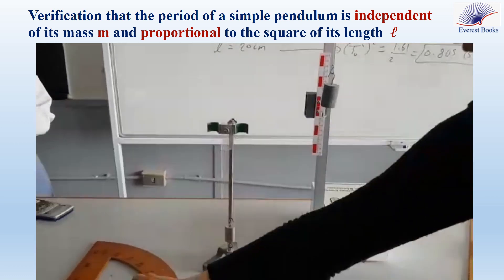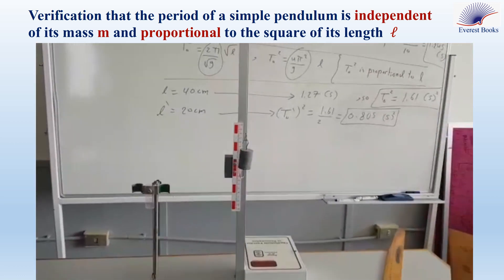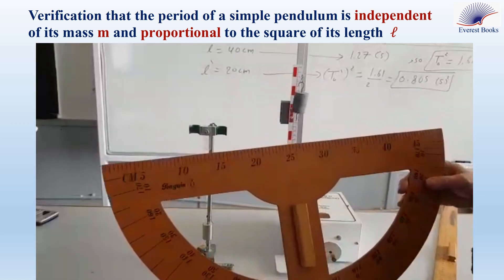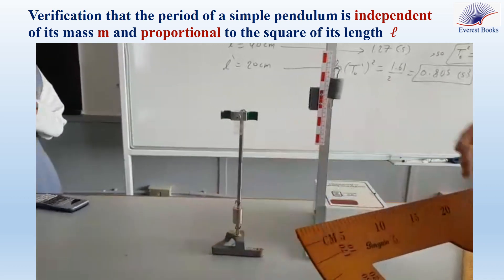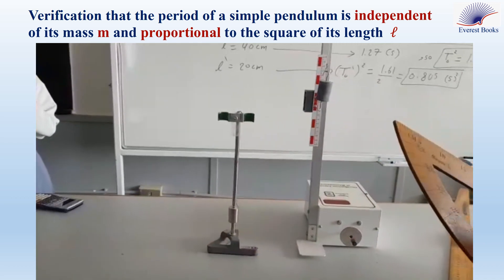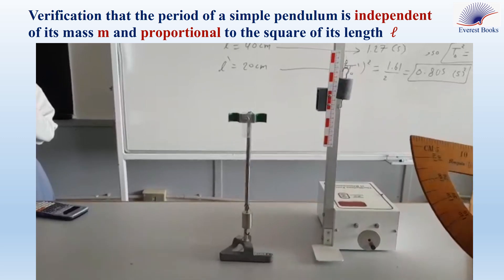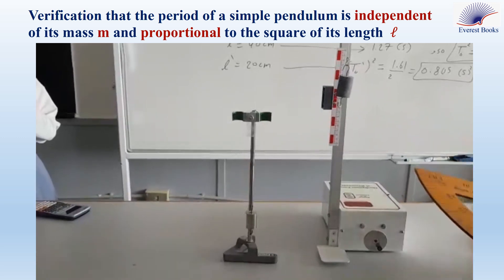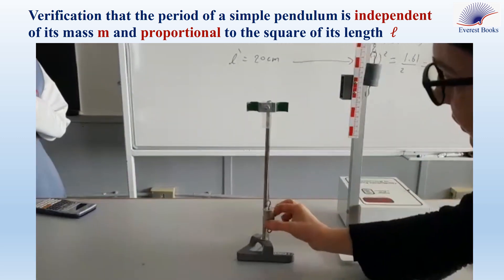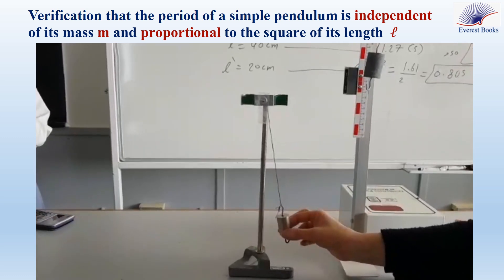Now, again, I will displace the pendulum by a small angle from its equilibrium position. We will measure the time for 10 oscillations. So, 10 degrees is about like this. Are you ready, Eileen? Yes.